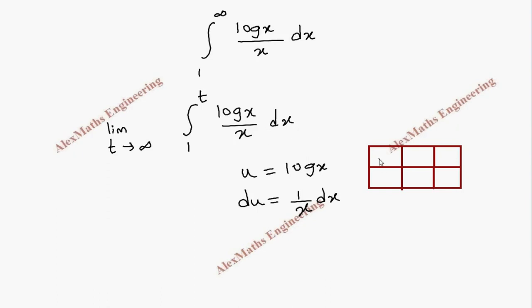And whenever we give substitution we have to write new limits. So originally the limit of x is from 1 to t, but the limit of u is when I put 1 here, log 1 is 0, and when I put t here it will become log t.